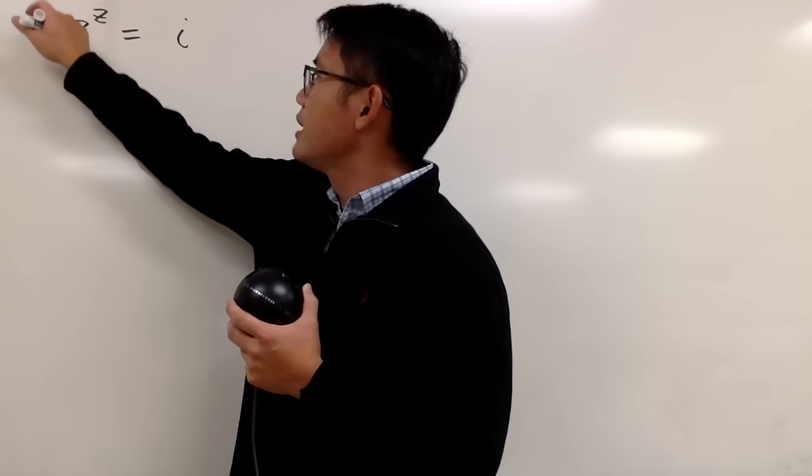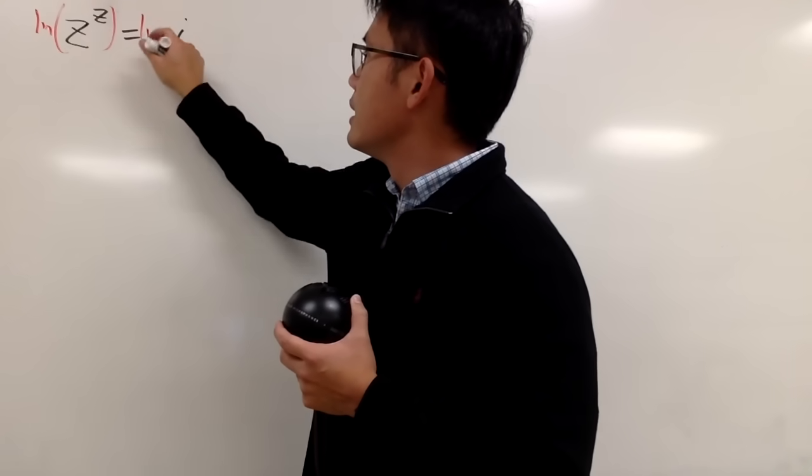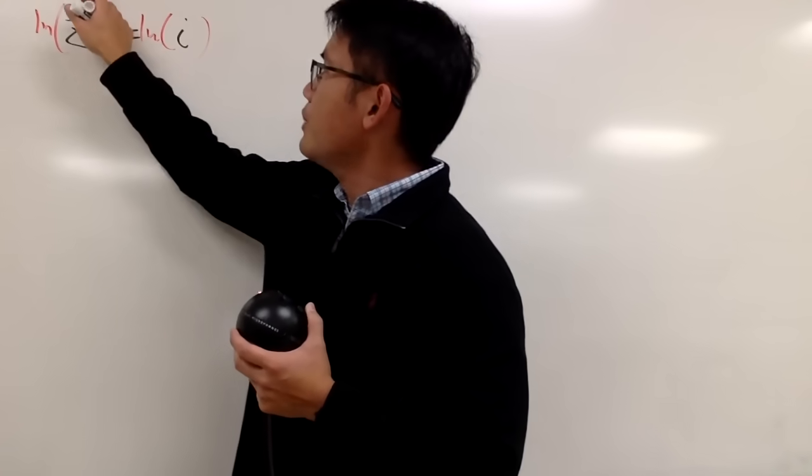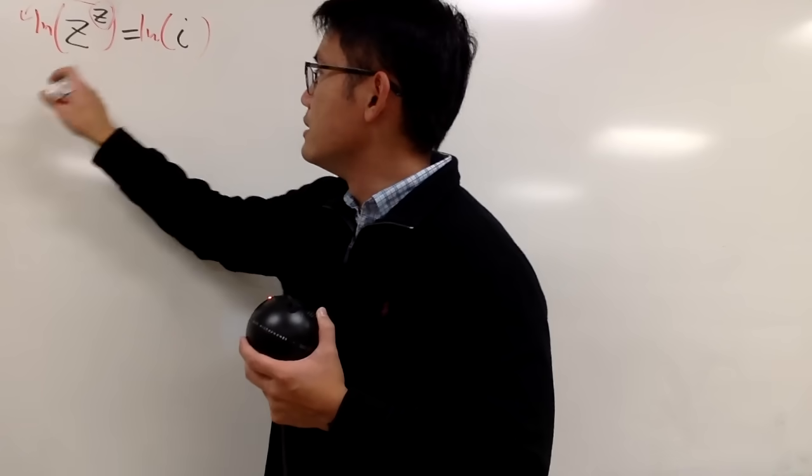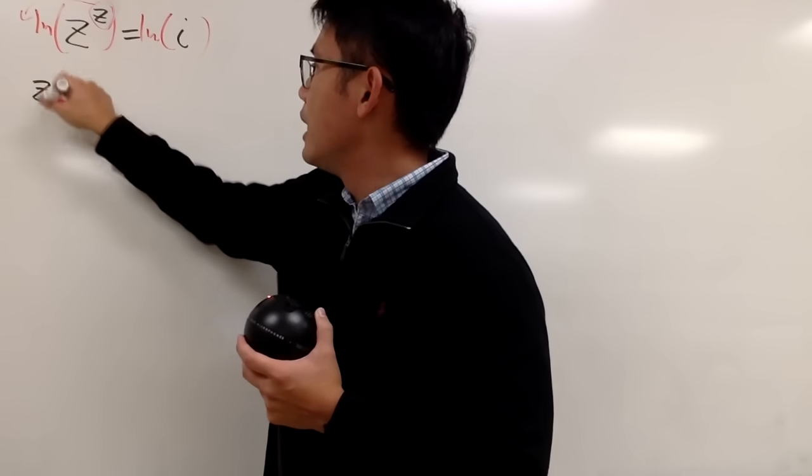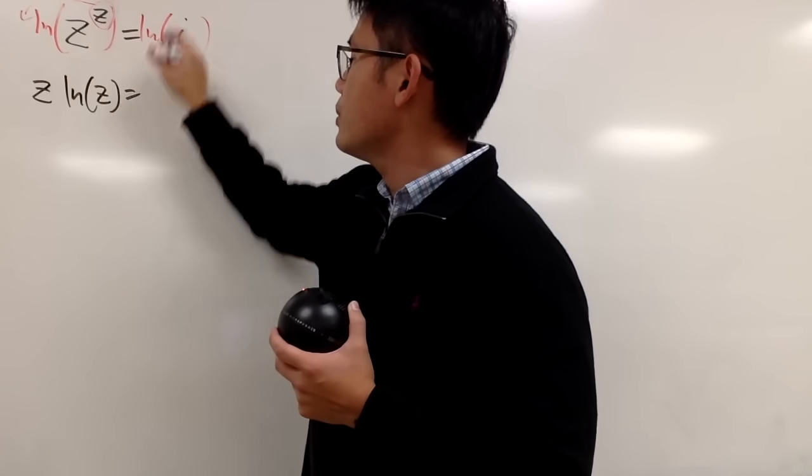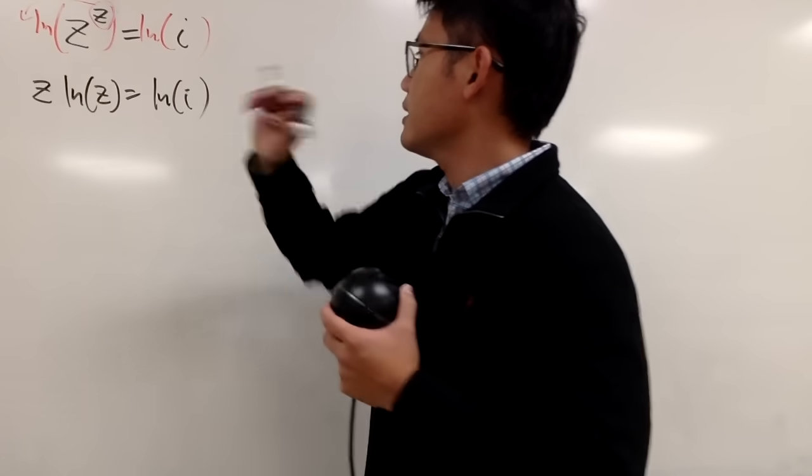Right here, let's just take the natural log on both sides. And of course, from here, we can bring the power to the front, and we see that this is just z times ln z, and this is equal to natural log of i, like that.